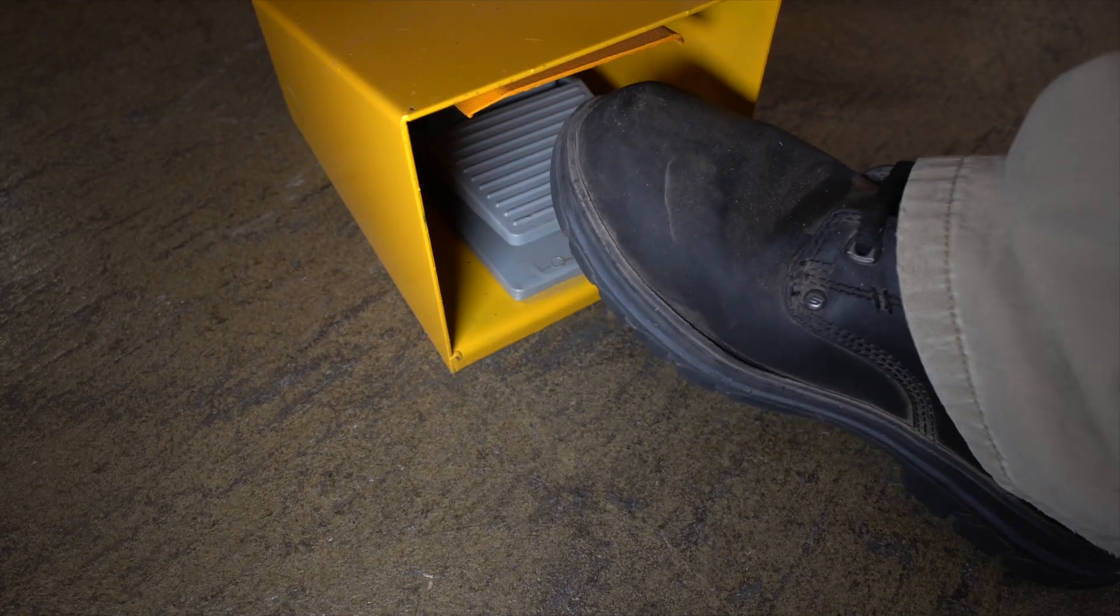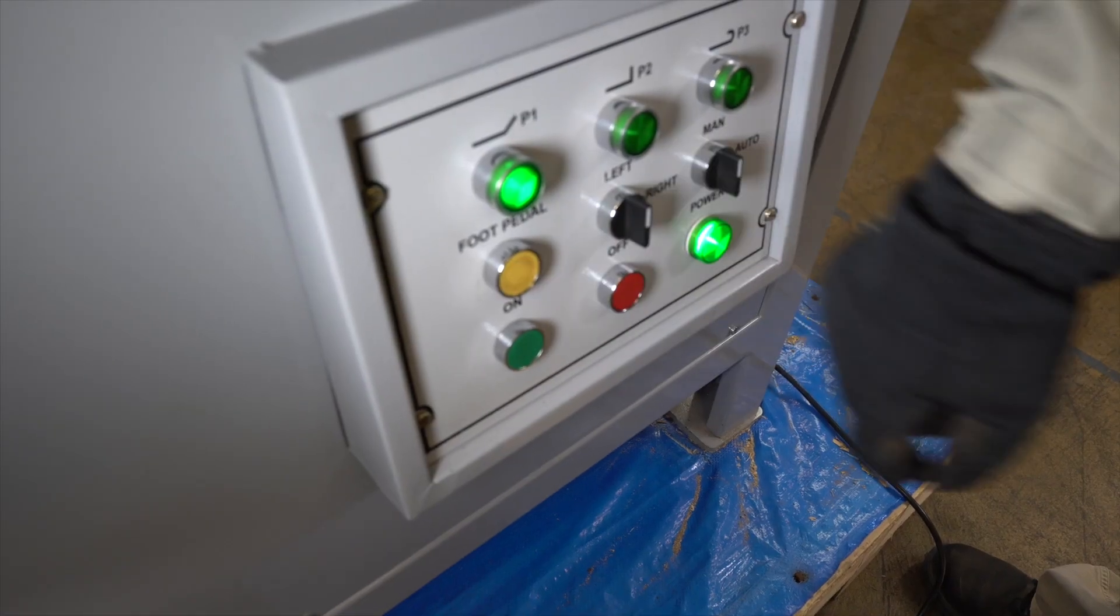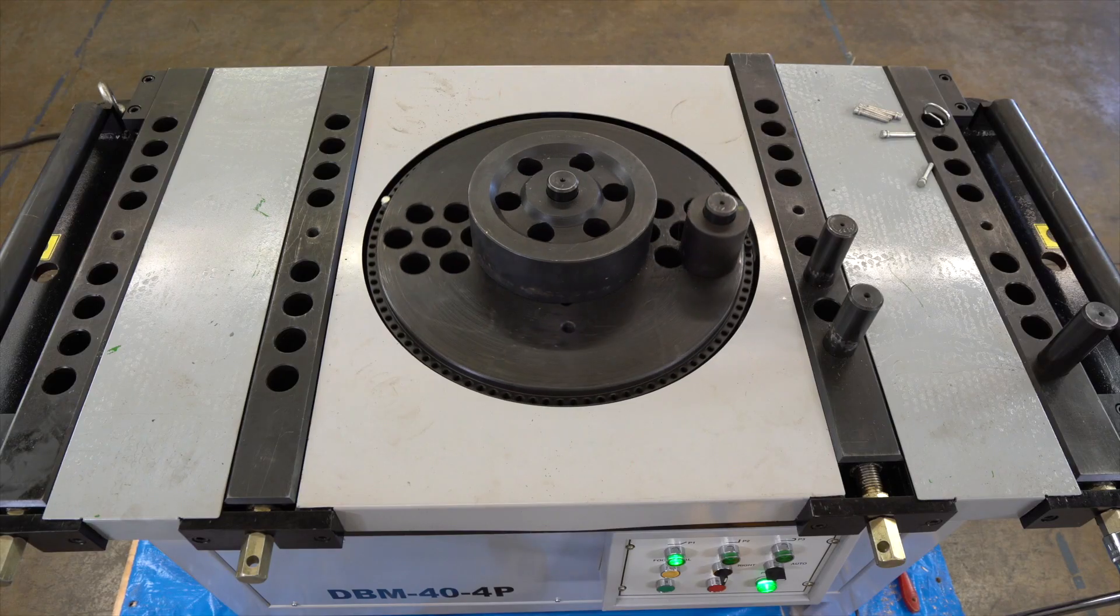When the dial is selected to auto mode, you simply press and release the button or foot pedal for the bend rotation to occur.